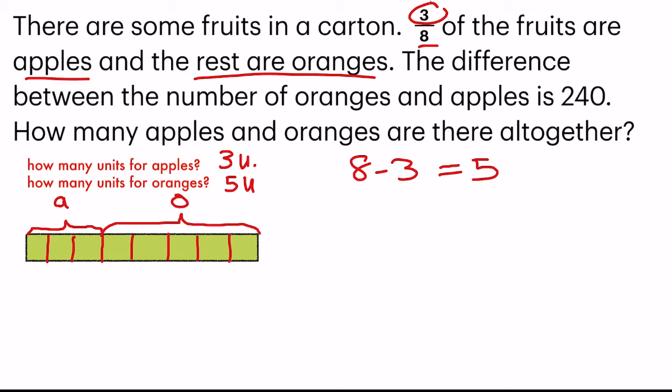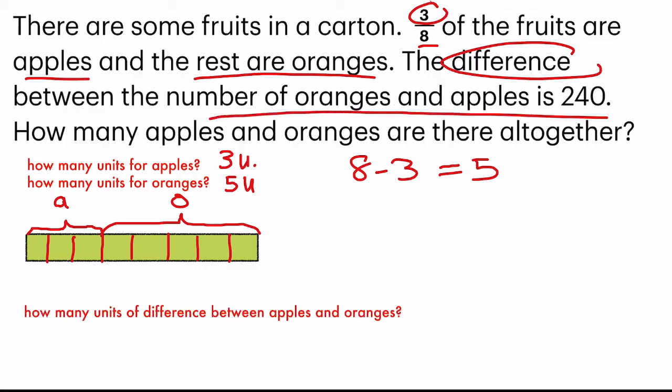Now they say the difference between the number of oranges and apples is 240. So how many units of difference between apples and oranges? Since there are 3 for apples, 5 for oranges, 5 minus 3, I get 2. So 2 units of difference. And I can link this 2 units of difference with 240.